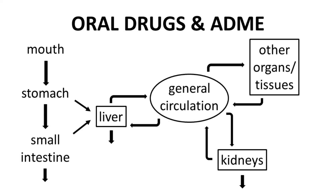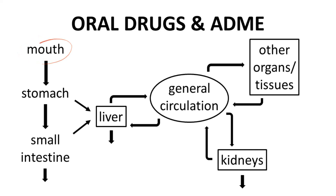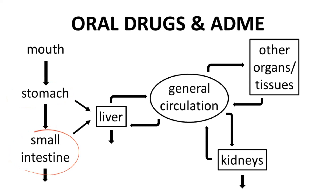Let's trace the path and fate of an oral drug in the body. Along the way, we will both define and use some of our terminology. An oral drug starts by going into a patient's mouth, then travels into the stomach and then the small intestine.